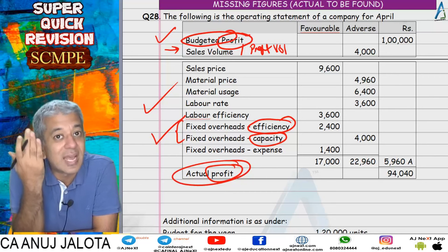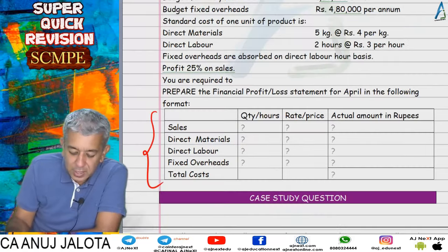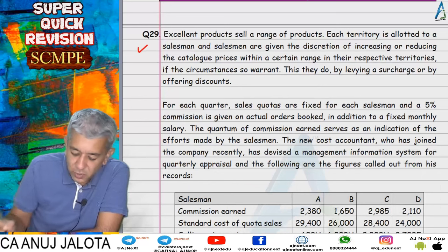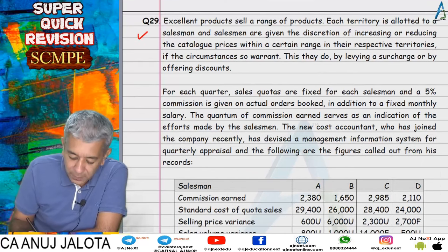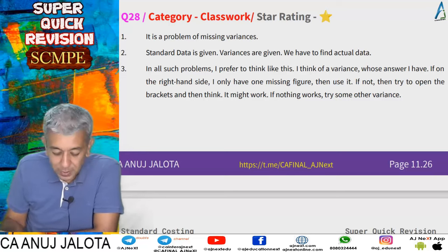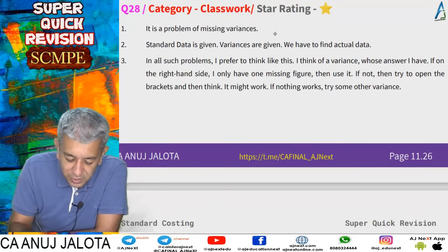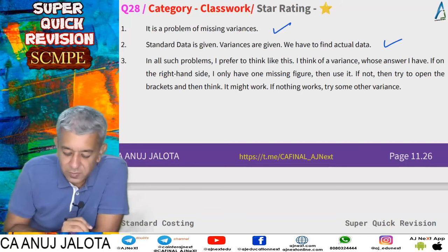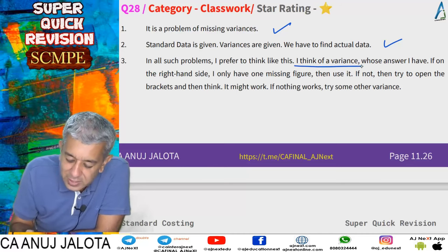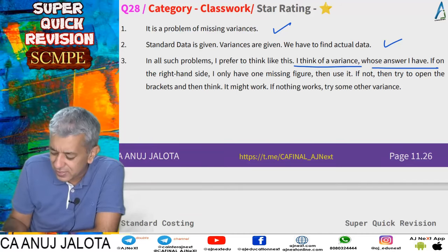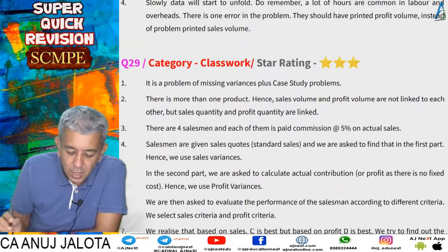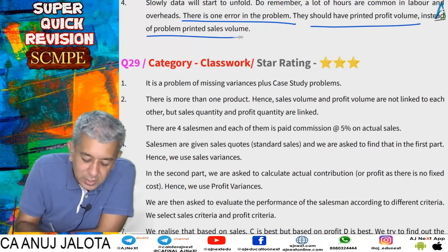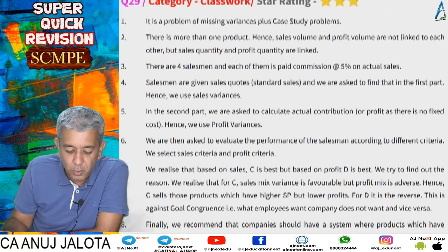A reconciliation statement tallies budgeted profit with actual profit, so obviously all variances in between will be profit variances. Sales volume variance would tally budgeted sales with actual sales — which is different. The problem had printed 'sales volume' but it should have been 'profit volume.' That was question 28.